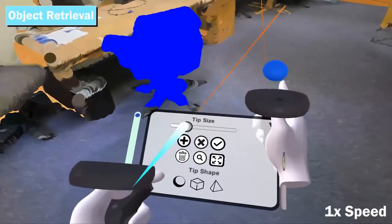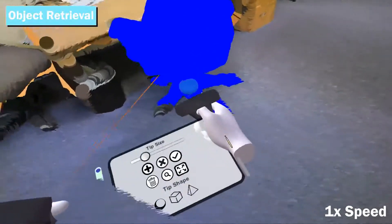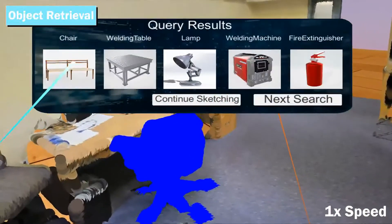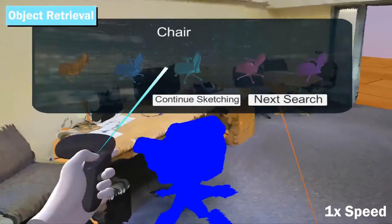Point cloud selections or sketches can be fed as query input to the back-end system where AI algorithms are implemented to assist the users in retrieving and aligning their models of choice on the point cloud.